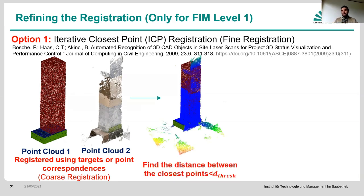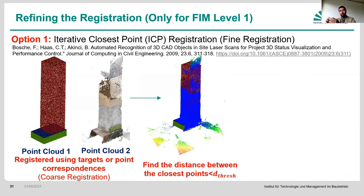You basically increase redundancy by finding each point — because target-based registration uses maybe 5, 10, or 20 different targets, but you might have millions of points. If you can use those points together and then iteratively improve that registration, it's most likely going to provide a better result.